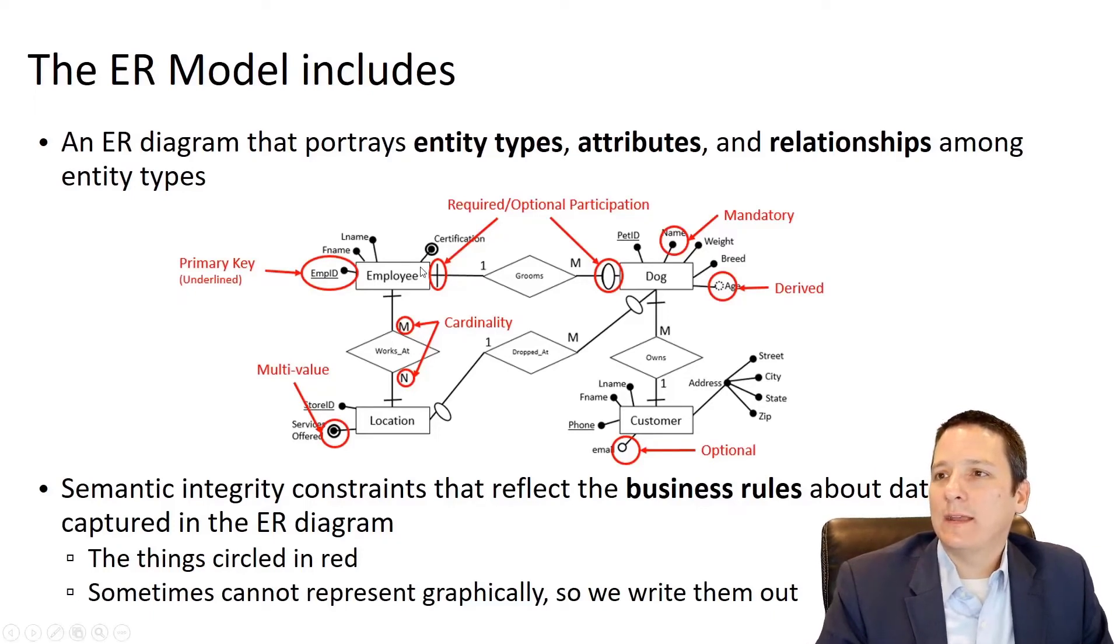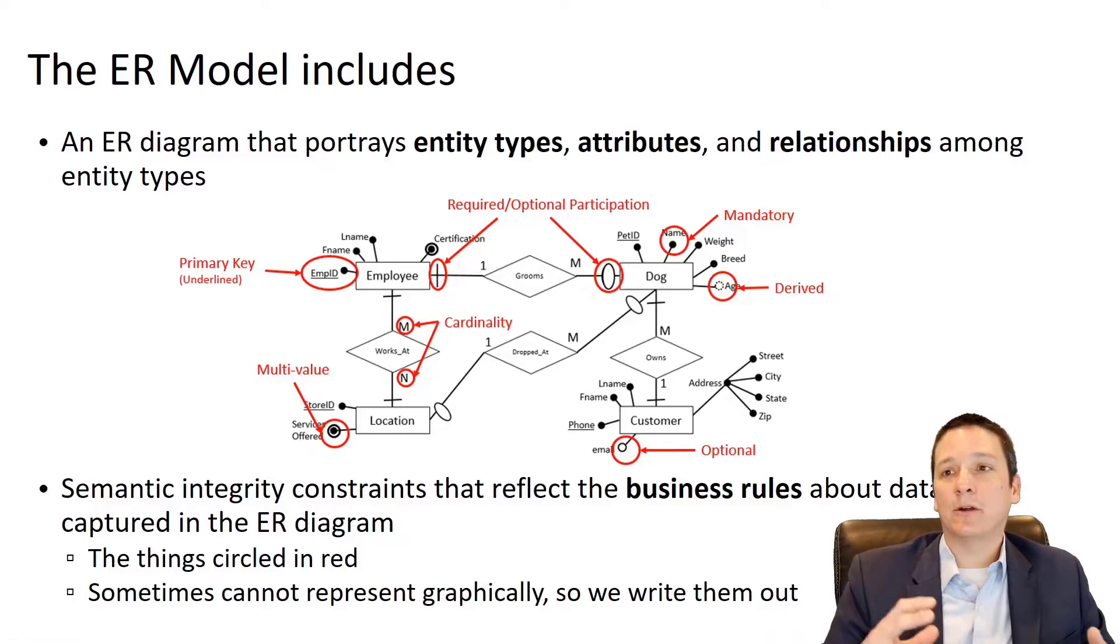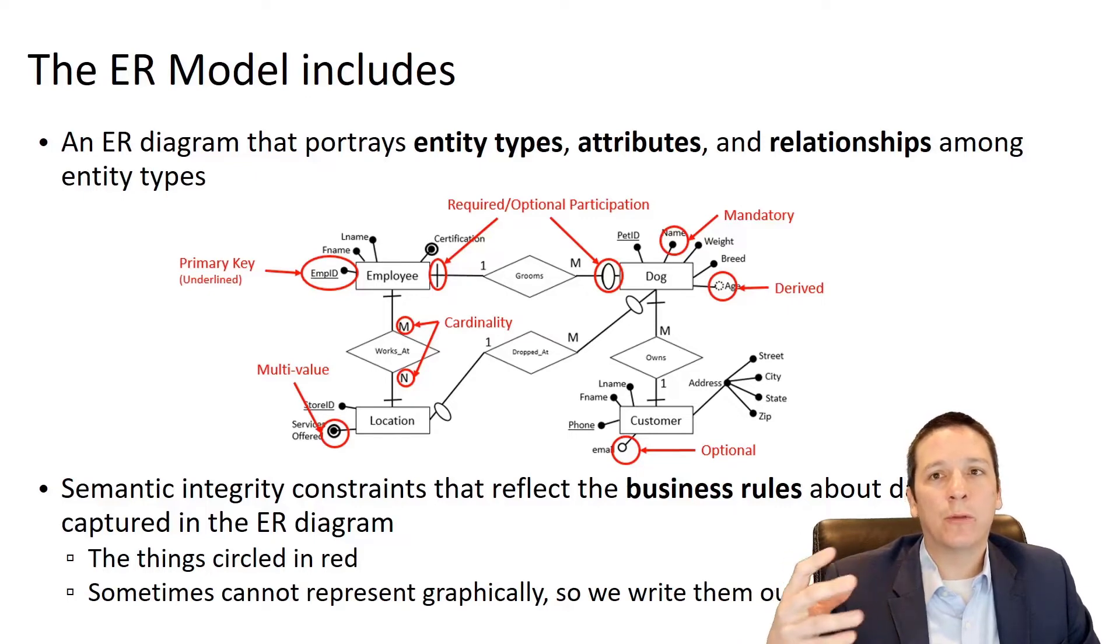So the diagram contains our entities, our attributes, that's all these things kind of hanging off of our entity rectangles here, and the relationships between the entities or our diamonds. And then there are semantic integrity constraints that reflect our business rules. And that's what's captured in all of the other symbols, our ones and our Ms that represent cardinality, our participation, the different constraints around the attributes, whether they're required, optional, multi-value, derived, things like that. And if there's anything that we can't represent graphically, typically we just kind of write those out in long form or in bullet points in a document that would go along with this ER model.